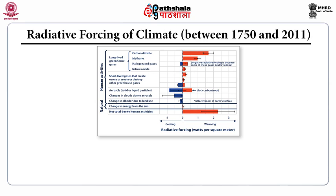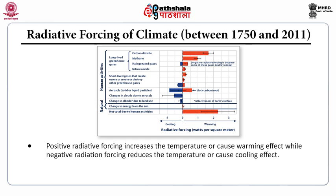This graph shows the radiative forcing of climate between 1750 to 2011. From human activities, long-lived greenhouse gases such as carbon dioxide, methane, halogenated gases, nitrous oxide, and short-lived gases and aerosols all contribute to radiative forcing. Natural radiative forcing is mainly due to the change in energy from the Sun and volcanic eruptions. Positive radiative forcing means an increase in temperature or warming effect, while the negative values are mostly from changes in clouds due to aerosols and short-lived gases that create or destroy greenhouse gases, represented in blue.